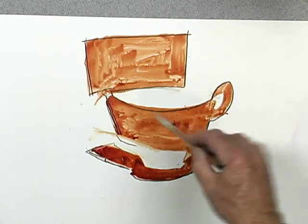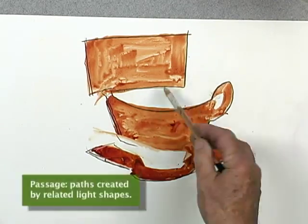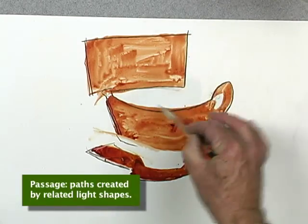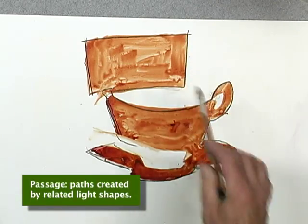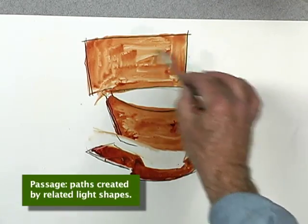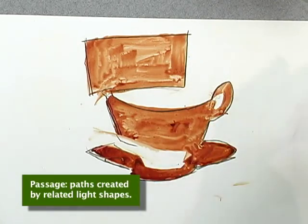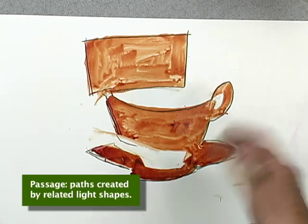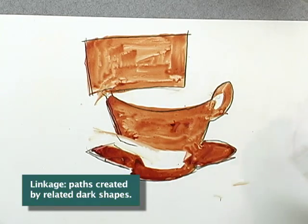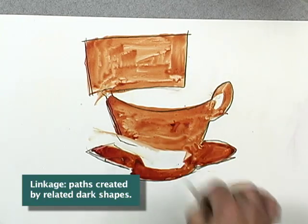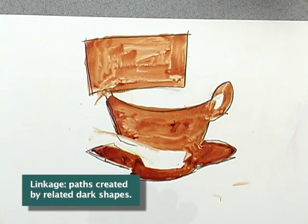When this kind of event happens, we call this passage — or letting the light move through — as opposed to the dark connecting things up into singular shapes, which we call linking. That becomes the concept. Of course, you can also add more darks to reinforce different elements of it.